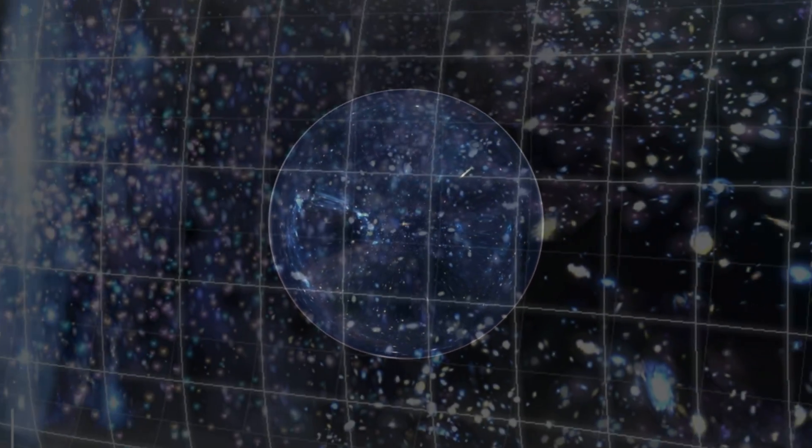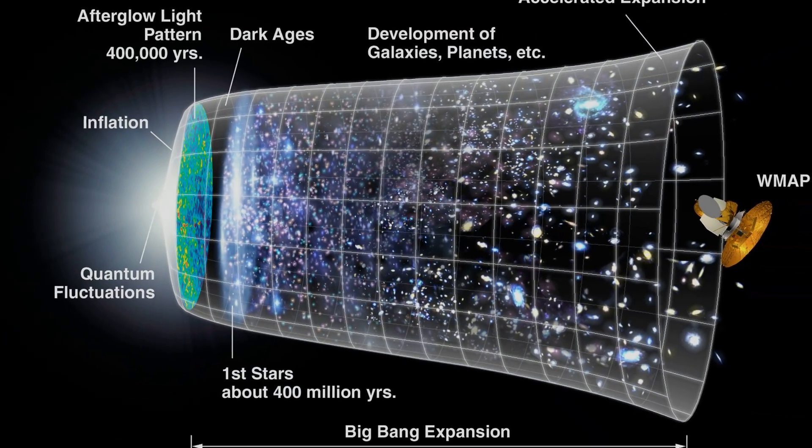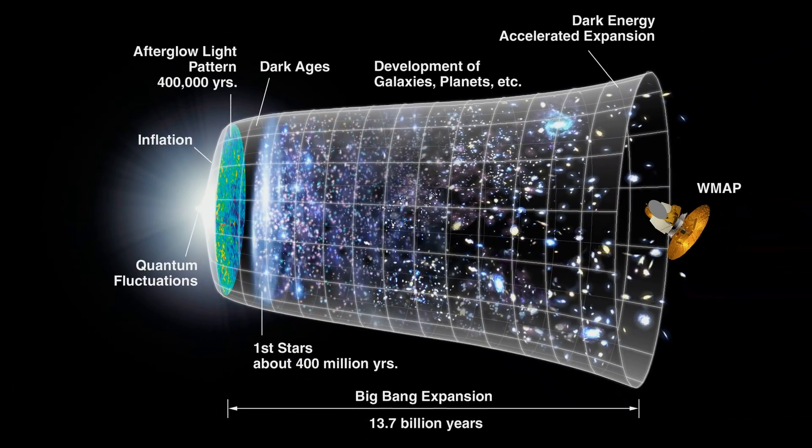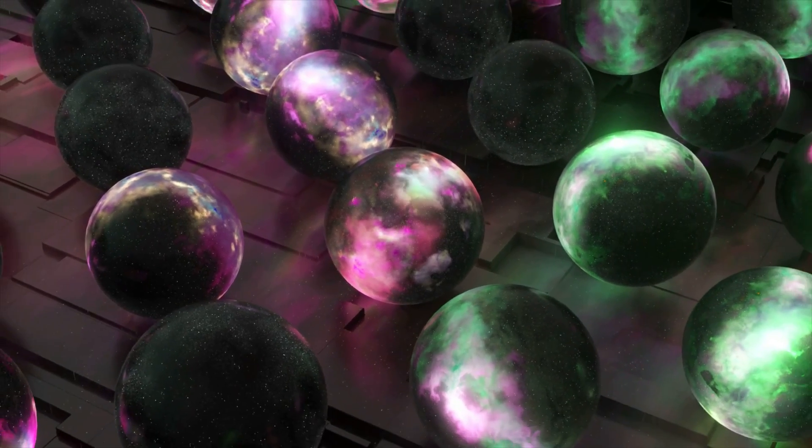And that phase is called inflation. So what we think happened is that before that, the universe was accelerating exponentially fast. It means it was doubling and doubling and doubling in size. And the numbers are ridiculous.